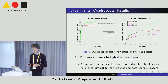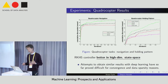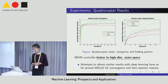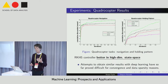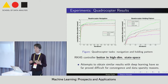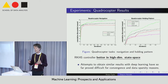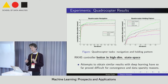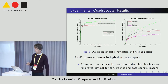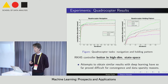Attempts so far to obtain similar results with deep learning have proved difficult, both for convergence and data sparsity reasons. Partly it's hard to get a lot of data here — it's not a data-rich environment. And perhaps that's an area where deep learning might have more difficulty, though I'm sure we'll get there.